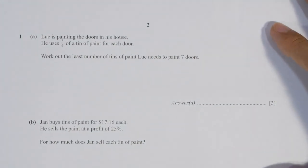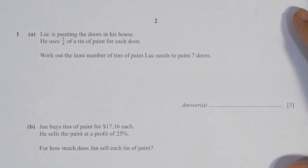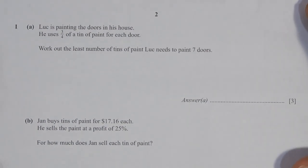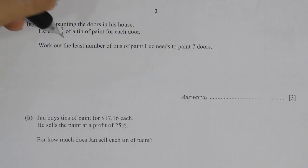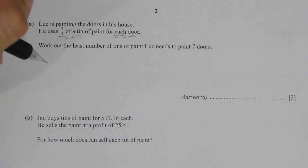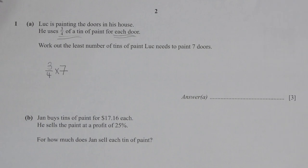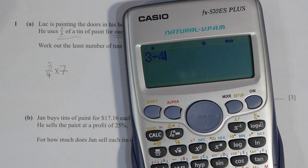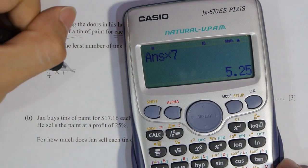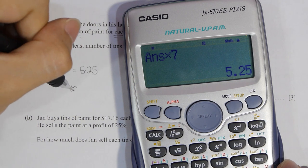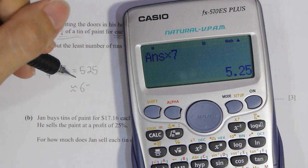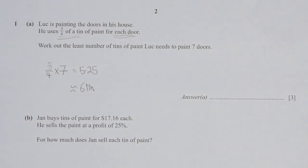For the first question, part A, it uses 3 over 14 of paint for each door, so 3 over 4 times 7 equals 5.25. However, the key thing here is that there's actually no 5.25 of paint for sale, so you're required to round up to 6 instead.